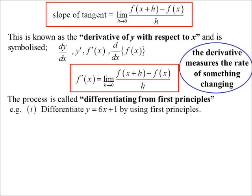So let's do one. Differentiate y equals 6x plus 1 by using first principles. Now I've deliberately picked a straight line there because we should be able to work out the answer already. What would the derivative be? Because remember it's going to measure the slope. Well a straight line, the slope of the tangent, it's going to be the same slope. So we should end up with 6 if this formula works. Let's see what happens.